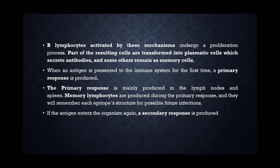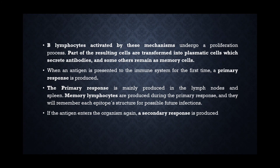B lymphocytes activated by these mechanisms undergo a proliferation process. Part of the resulting cells are transformed into plasmatic cells which secrete antibodies, and some others remain as memory cells, which are helpful for future purposes. When an antigen is presented to the immune system for the first time, a primary response is produced. The primary response is mainly produced in the lymph nodes and spleen, where memory lymphocytes are produced and will remember each epitope structure for possible future infections.